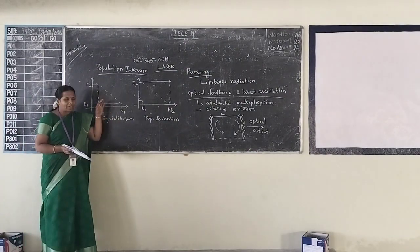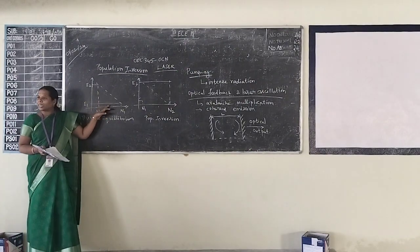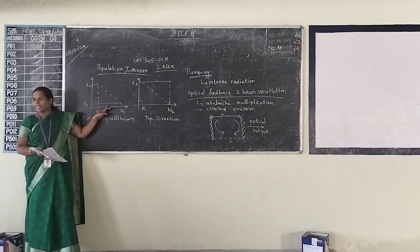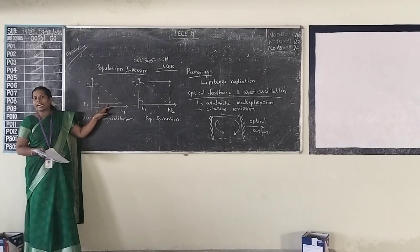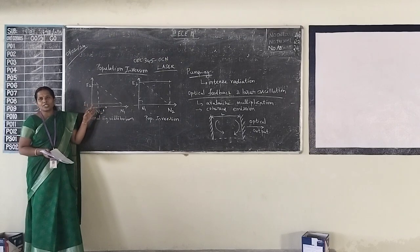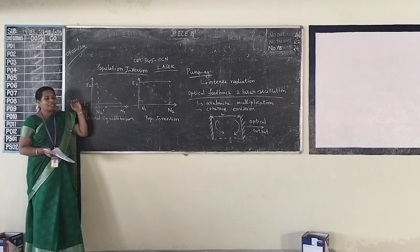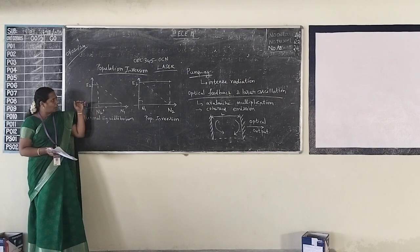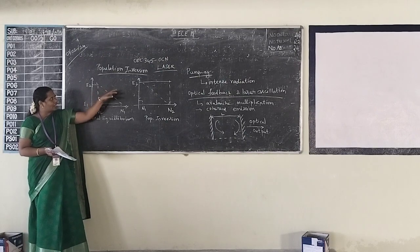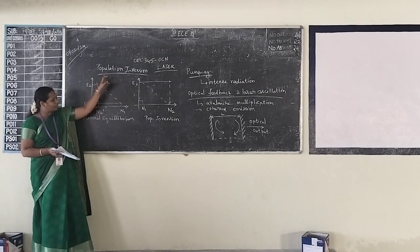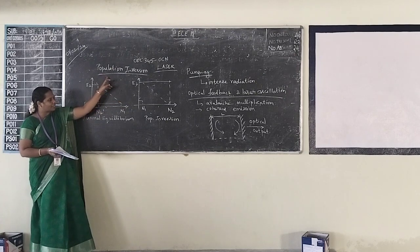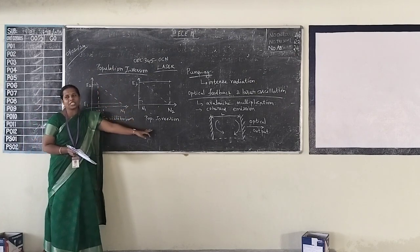Electrons must go to the upper energy level. In order to achieve stimulated emission, we must have electrons in the upper energy level. In order to have more electrons in the upper energy level, this condition is called population inversion.